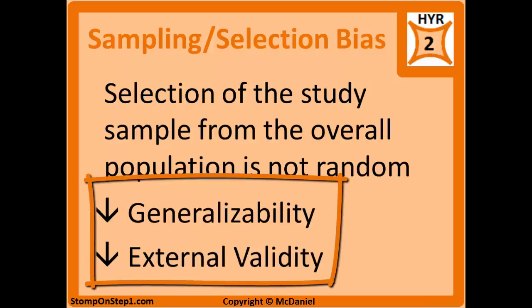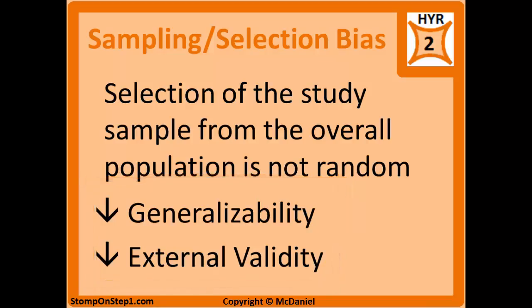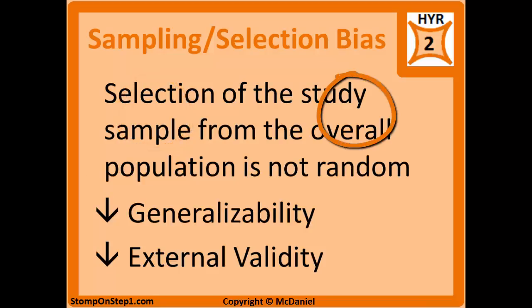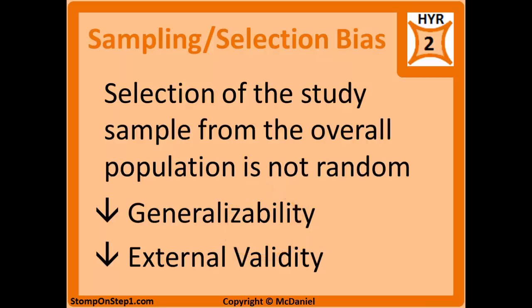A common example is when study participants volunteer for a study. Those who choose to volunteer are likely different than those who choose not to. Another example would be your recruitment method. If you're recruiting only via the internet, you wouldn't get any patients who don't have internet access, potentially missing rural locations or people from lower socioeconomic levels, so your sample wouldn't be representative of the overall population.